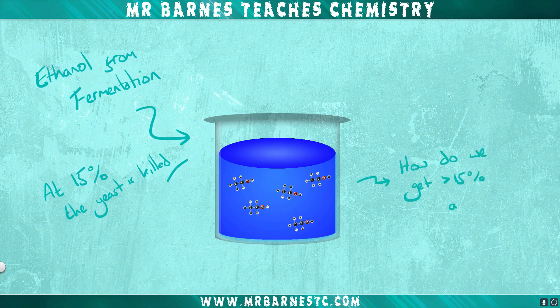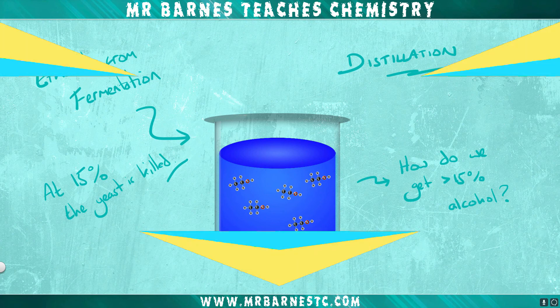So how do we get above 15%? The answer is distillation, which hopefully you have heard of before. There are two types of distillation: simple distillation and fractional distillation, so let's have a look at both.